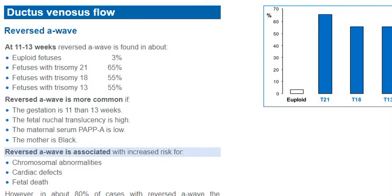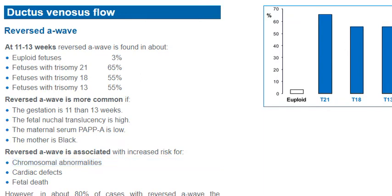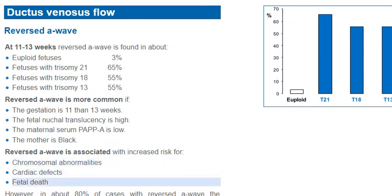Reversed A wave is associated with increased risk for chromosomal abnormalities, cardiac defects, and fetal death. However, in about 80% of cases with reversed A wave, the pregnancy outcome is normal.